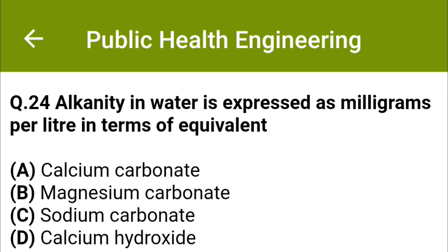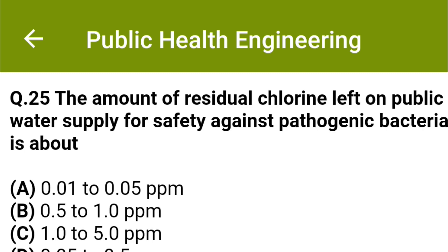The amount of residual chlorine left in public water supply for safety against pathogenic bacteria is: option A: 0.01 to 0.05 ppm, option B: 0.5 to 1.0 ppm, option C: 1.0 to 5.0 ppm, option D: 0.05 to 0.5 ppm. The correct answer is option D: 0.05 to 0.5 ppm.